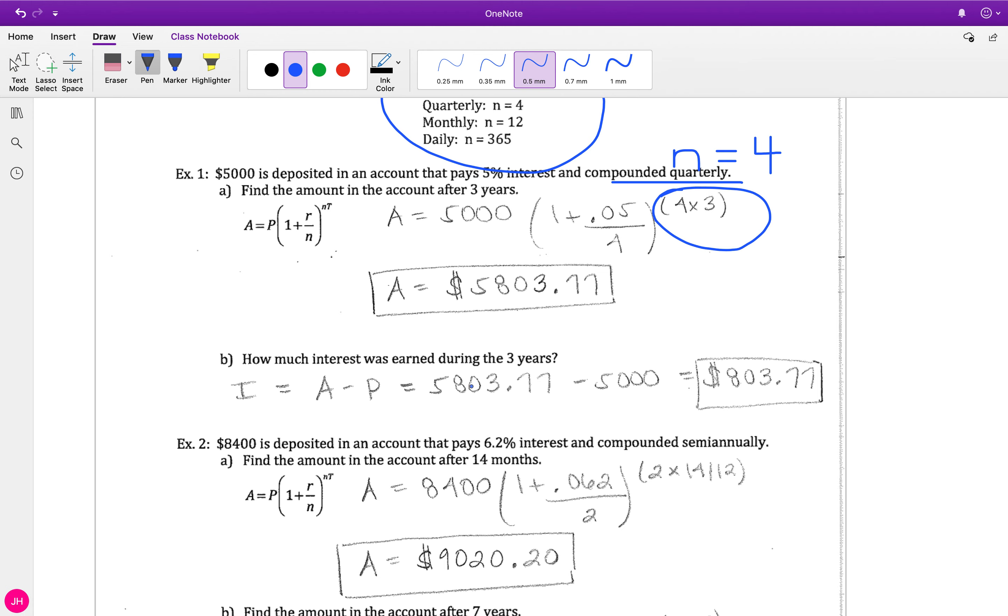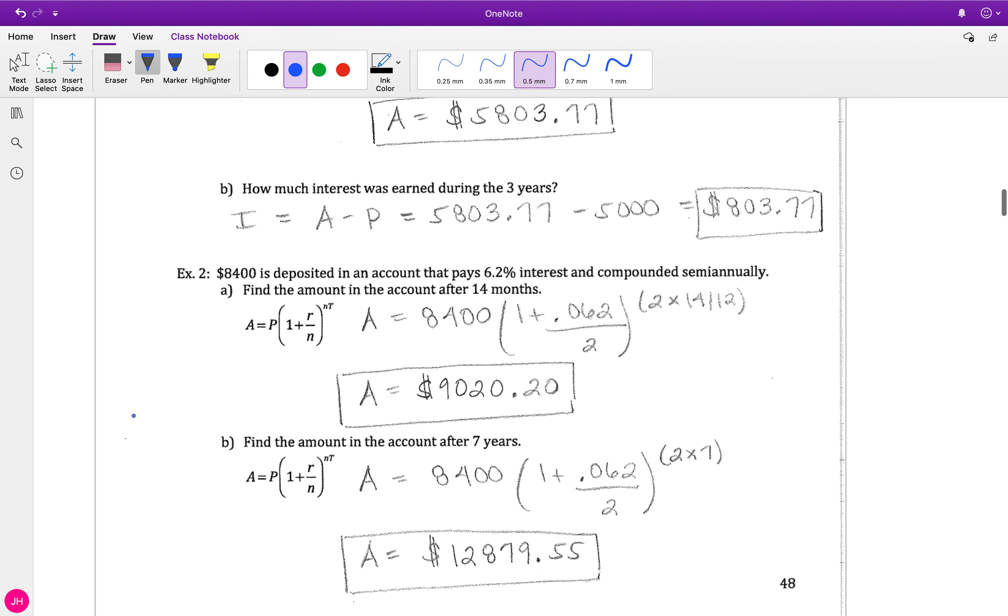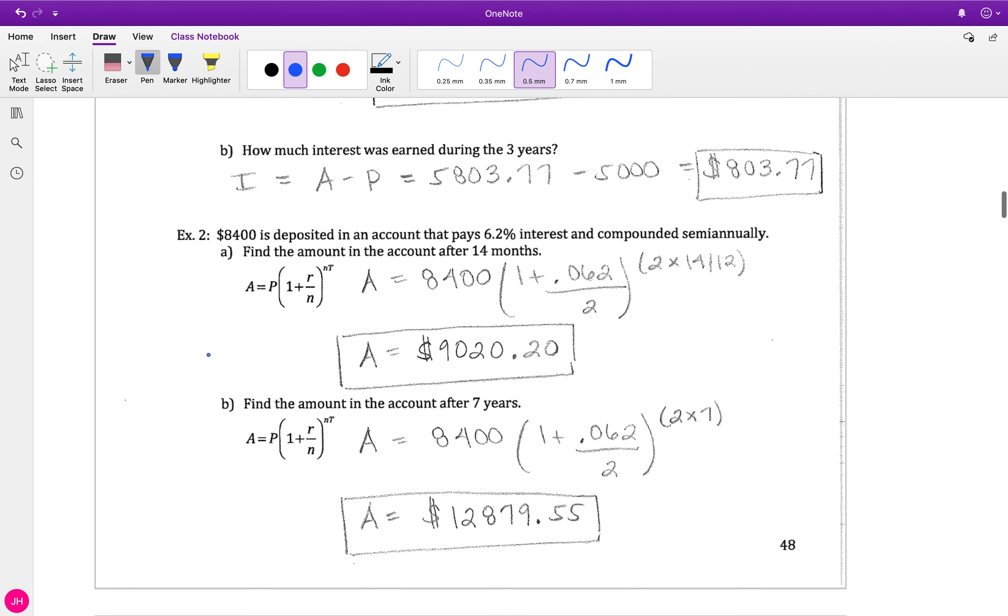Here's just another problem. We're depositing, so that's our P. My R is 0.06. Compounded semi-annually means n is 2. And 14 months - remember with those 14 months, that is 14 over 12. I'm gonna plug all this in: my P, my R, my n, and my T is gonna be 14 over 12. That's gonna give me the answer: nine thousand twenty dollars and twenty cents.